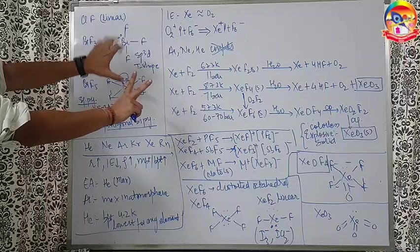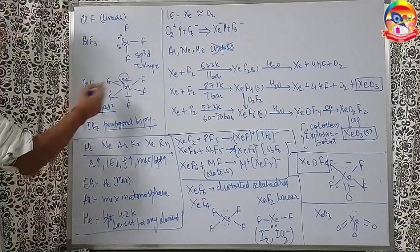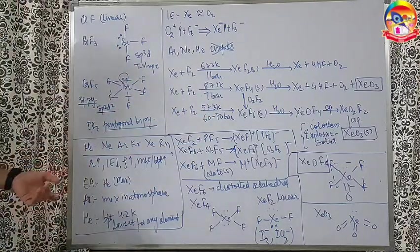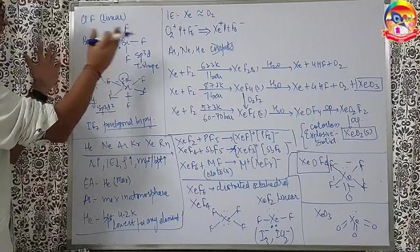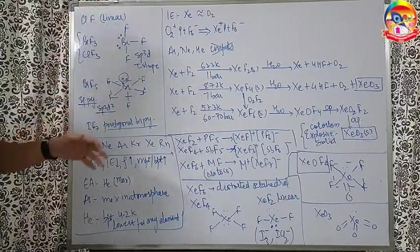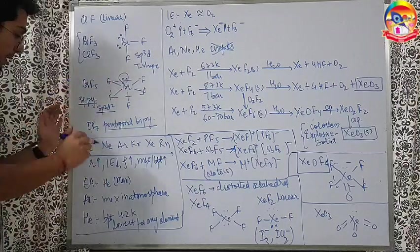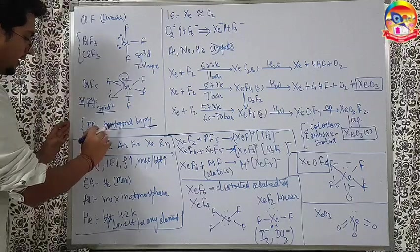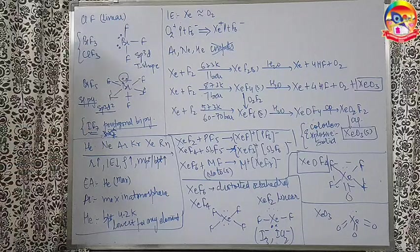BrF5, same logic. Seven electrons are there. Five bonds made. One lone pair left. So, one lone pair and five normal bonds. Hybridization SP3D2. Square pyramidal. IF7, seven electrons. All seven making the bonds. Pentagonal bipyramidal. Similarly, BrF3 is there. ICl3 also you can say. Or you can also say ClF3. All these will have the same structure. Out of pentahalides, only IF7 is stable. Remaining XX'7, they are not stable. IF7 is sufficiently stable. Only that one exists.